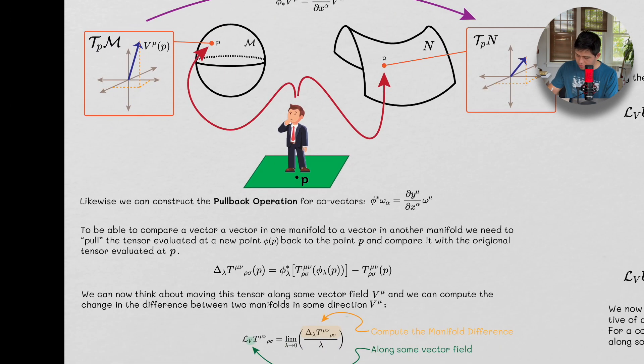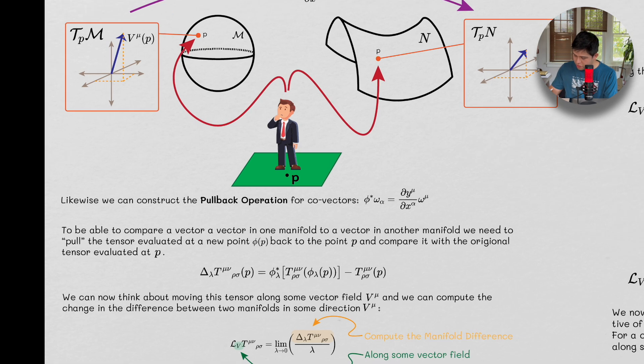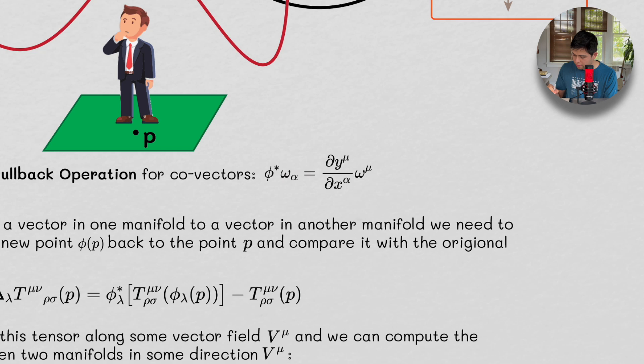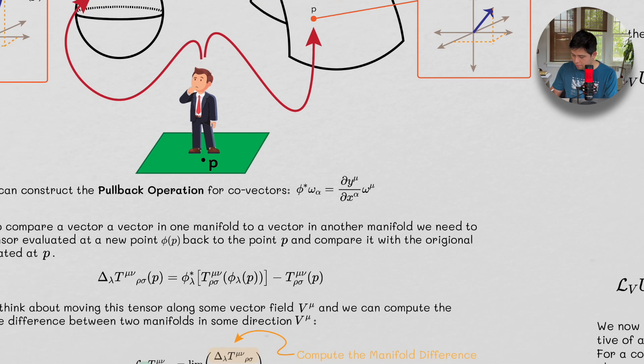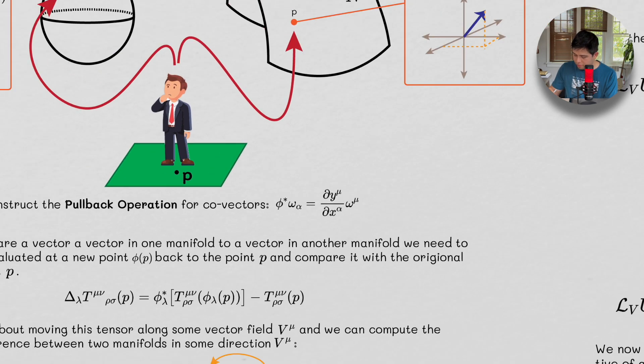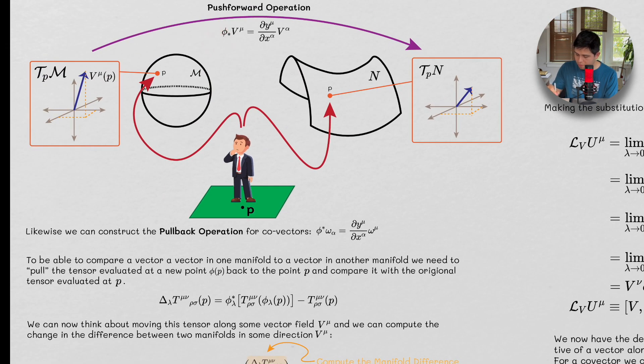Likewise we can construct a pullback operation. The pullback operation for a covector is going to look something like this. Where again we have the transformation, but we're summing over mu instead of alpha, and here we get alpha in the denominator. So the idea here is that we're defining a push forward operation and a pullback operation.